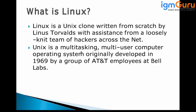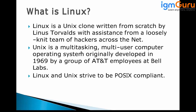Unix became famous and widely used in the industry because it is a multi-tasking and multi-user OS, developed in 1969 at AT&T Labs. Multiple users can use it in parallel and perform multi-tasking. Linux and Unix both try to be POSIX compliant, and that is one of the unique features that made people adopt them.